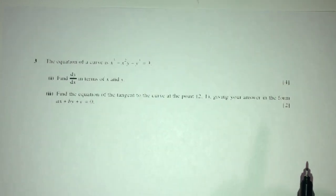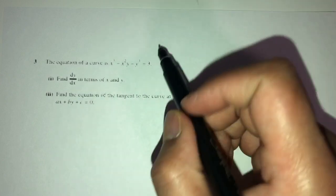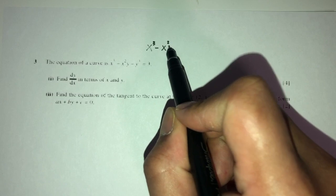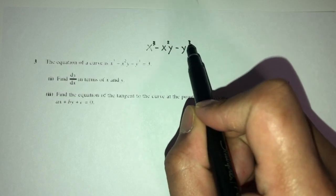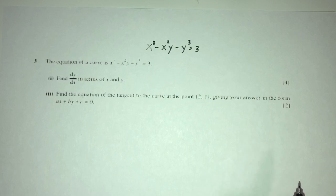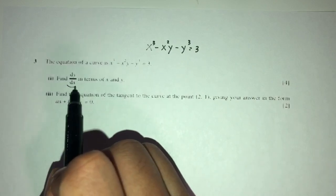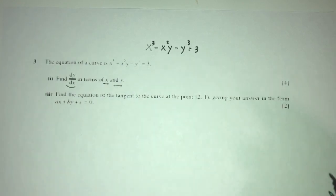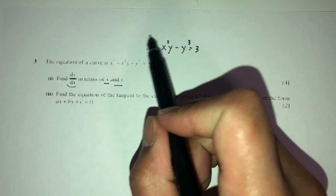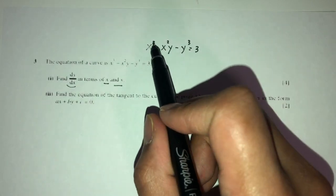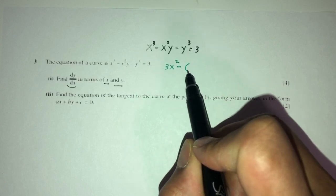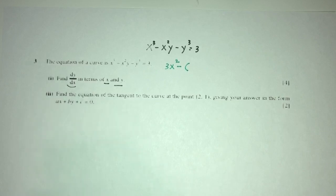Let's move on to question number 3. Here we have the equation of a curve: x cubed minus x squared y minus y cubed equals 3. For part 1, find dy/dx in terms of x and y. This is an implicit equation, so we differentiate with respect to x. That gives 3x squared. Then we have minus, and since x squared y is a product, we use the product rule.